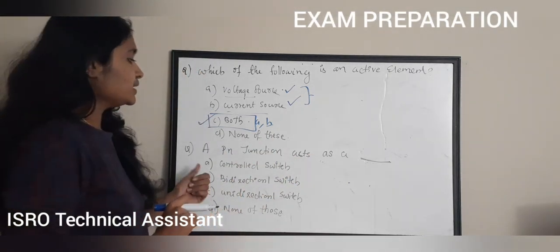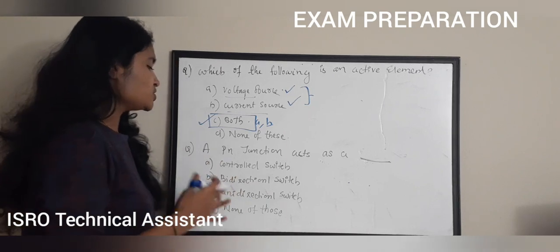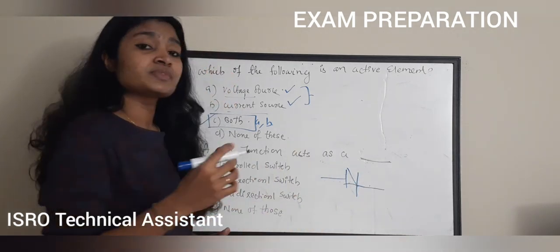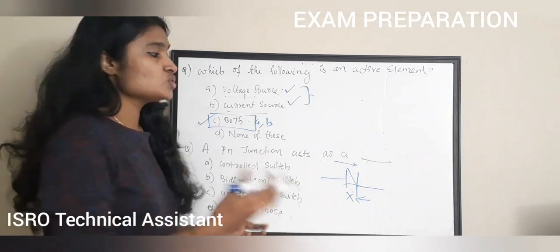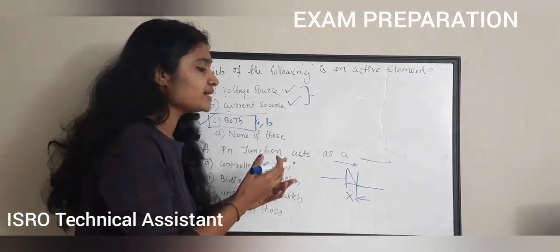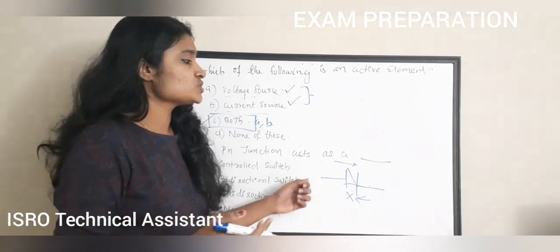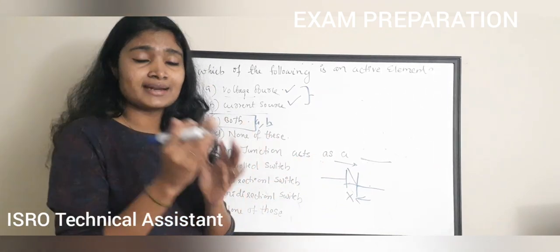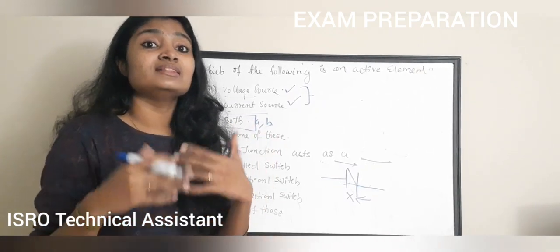The next question: a P-N junction acts as a dash. Option A: controlled switch. Option B: bi-directional switch. Option C: unidirectional switch. Option D: none of these. A P-N junction conducts current only in one direction (forward bias) and blocks it in the reverse direction. Therefore, it is a unidirectional switch. This principle is used in rectifiers. The correct answer is option C.